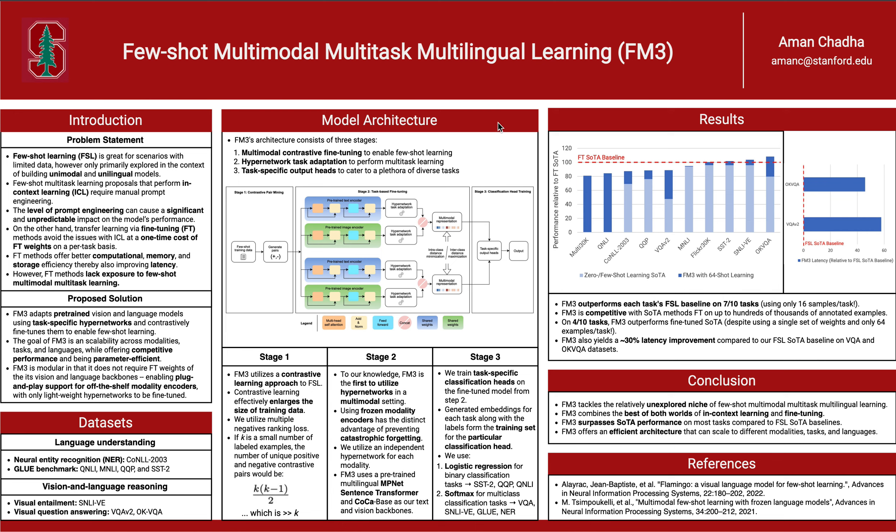Now let's move over to the model architecture. If you pop open the hood of FM3, you'll see three distinct stages. Stage 1 utilizes contrastive learning, which effectively scales up our datasets to K times K-1 by two examples, assuming K is the number of annotated dataset examples. Stage 2 utilizes hypernetworks, which offer knowledge sharing across tasks.